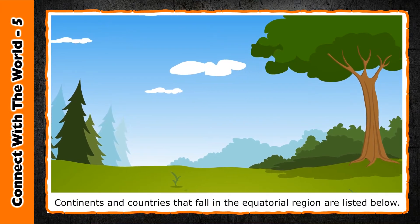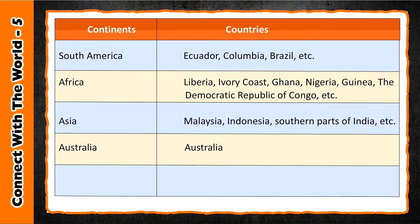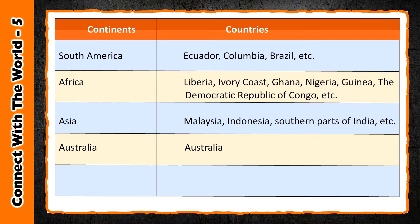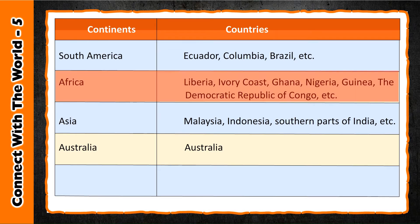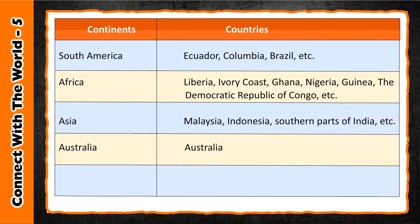Continents and countries that fall in the equatorial region include: South America — Ecuador, Colombia, Brazil, etc.; Africa — Liberia, Ivory Coast, Ghana, Nigeria, Guinea, the Democratic Republic of Congo, etc.; Asia — Malaysia, Indonesia, southern parts of India, etc.; and Australia.